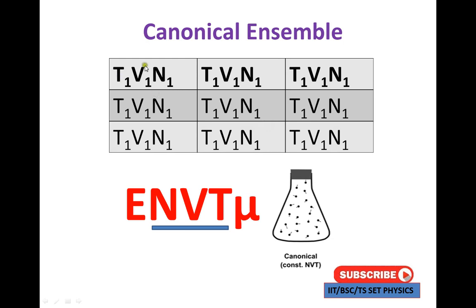Let us show the values: T1, V1, N1. Temperature is held constant; energy can change. The canonical ensemble variables are T, V, N. To summarize, the three ensembles have variable sets: E, V, N for micro-canonical; T, V, N for canonical.